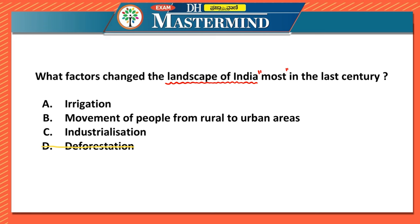After eliminating deforestation, you are left with irrigation, movement of people from rural to urban areas, and industrialization. The answer is: movement of people from rural to urban areas. It doesn't mean irrigation or industrialization didn't change India's landscape — irrigation improved agricultural productivity and turned barren land into fertile land, playing a crucial role.